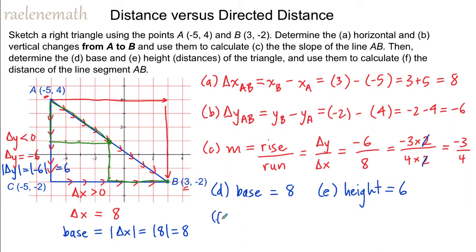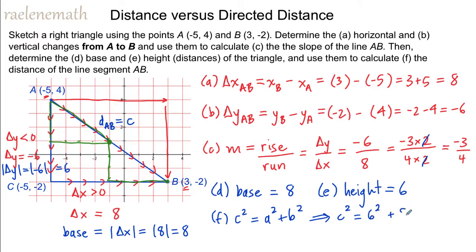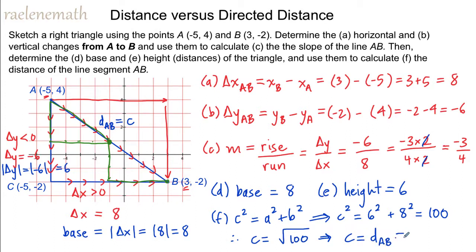The last part of the question asks us to calculate the distance of the line segment from A to B. That distance is nothing more than the hypotenuse, so we can use the Pythagorean theorem, which says that c squared is equal to a squared plus b squared. The hypotenuse squared will be the height squared plus the base squared, which is equal to 36 plus 64, which is 100. Therefore, c is going to be the square root of 100, which is equal to 10. So the distance from A to B, or the hypotenuse of the right triangle, is equal to 10.